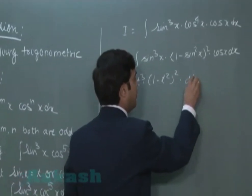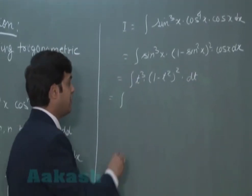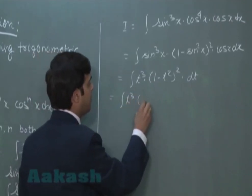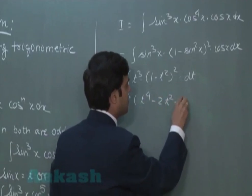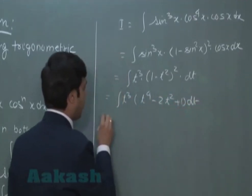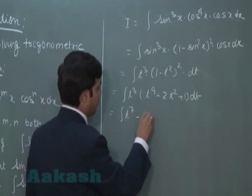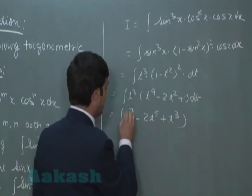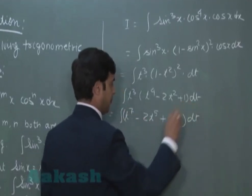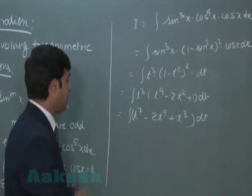The whole function, ek nai variable t ka term mein convert ho gya. Let us simplify it. This is t³ multiplied with (t⁴ - 2t² + 1) dt or (t⁷ - 2t⁵ + t³) dt. Now, it is quite easy to integrate this function. On integrating it,